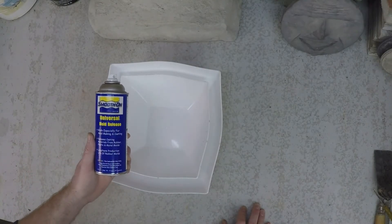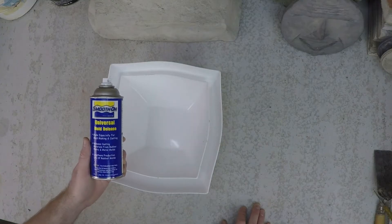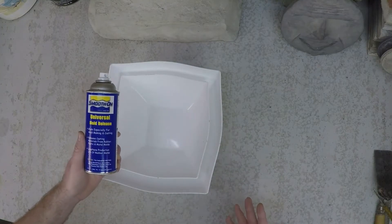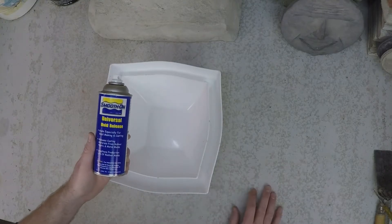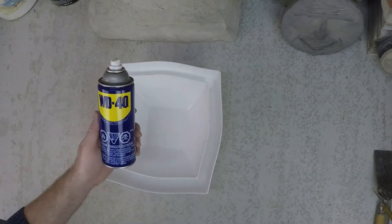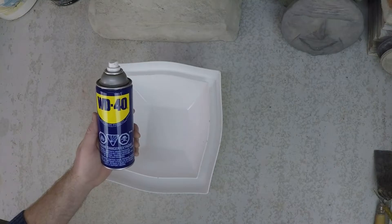Ideally, a mold release spray that's purpose-made for the application, that's what you want to use. But if you don't have any of that or you need a replacement, there are some things you might be able to use from around your house. I mean, the bottle looks kind of similar. Does that mean this should be good to use?